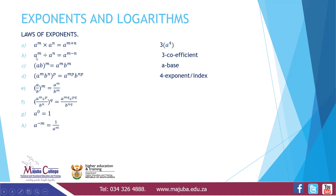Second law: A raised to M divided by A raised to N equals A raised to M minus N. We're having the same bases here, and we keep one base.